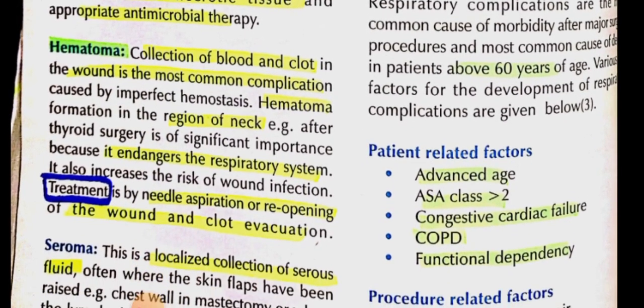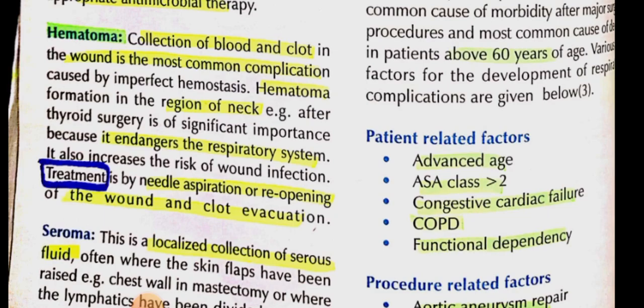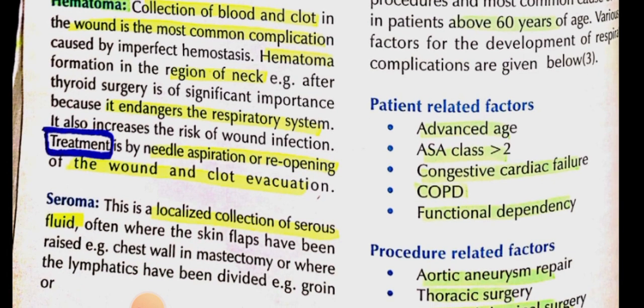Hematoma is a collection of blood or clot within the wound — the most common complication caused by imperfect hemostasis. If it forms in the neck region after thyroid surgery, it can endanger the respiratory system and increase the risk of wound infection. Treatment involves needle aspiration or reopening the wound to remove the clot.